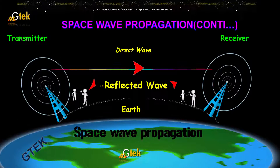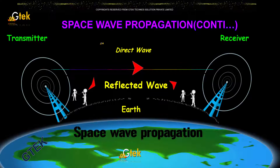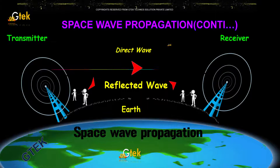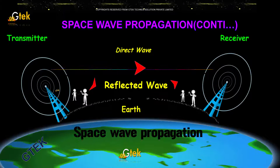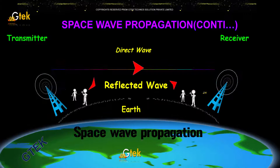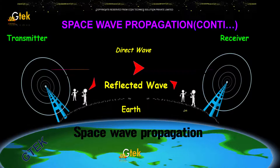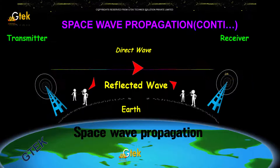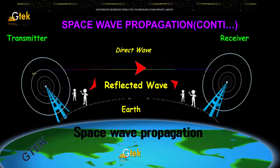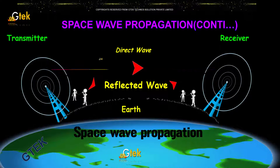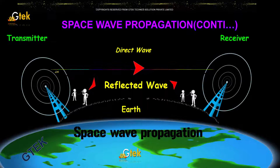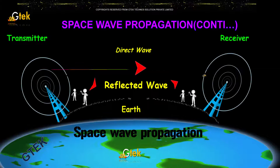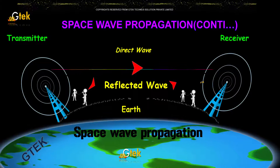Looking further at space wave propagation, above the earth you can see the waves navigating and propagating between the transmitter and the receiver.